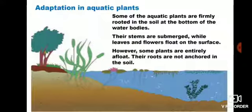Adaptations in aquatic plants. Some of the aquatic plants are firmly rooted in the soil at the bottom of the water bodies. Their stems are submerged while leaves and flowers float on the surface, as you can see in the picture. However, some plants are entirely afloat and their roots are not anchored in the soil.